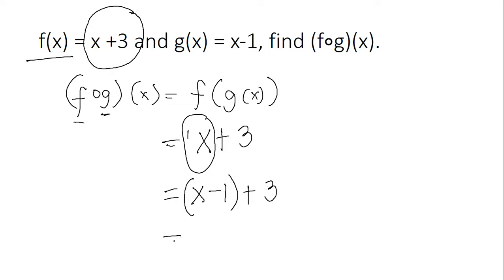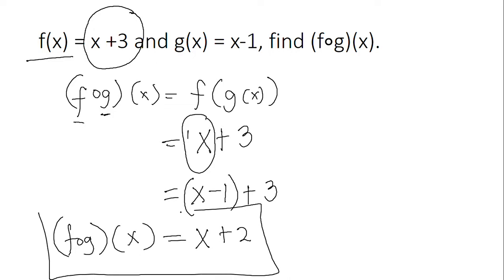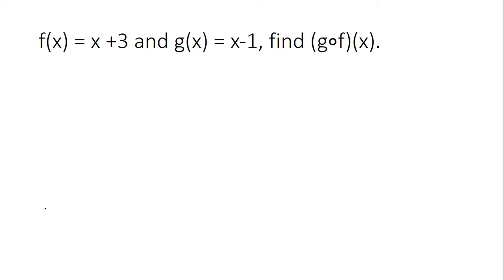We copy the rest of f of x, which is plus 3. Combining like terms: x, and negative 1 plus 3 equals positive 2. So our f circle g of x equals x plus 2. I hope that makes it clear enough.